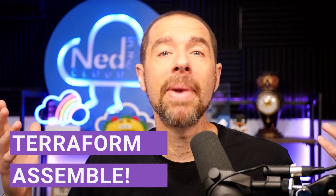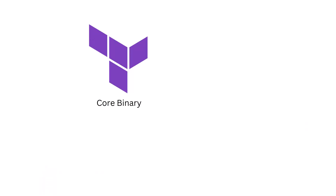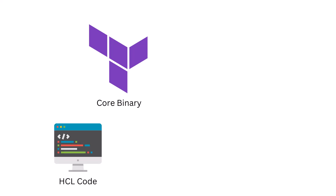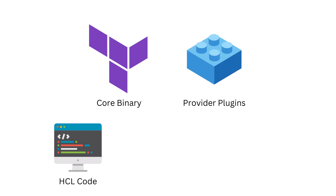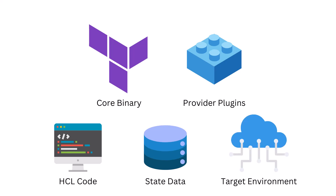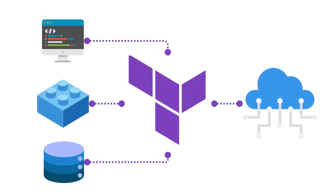To complete our mental model of Terraform's core components, let's take a look at how they all fit together. We have the Terraform core binary that is responsible for key Terraform actions. It evaluates configuration files to determine a desired deployment, uses provider plugins to speak to cloud services and provision infrastructure in a target environment, and then uses state data to store the mapping of configuration objects to actual objects in the target environment. All these components combine together to enable Terraform to manage your infrastructure as code.